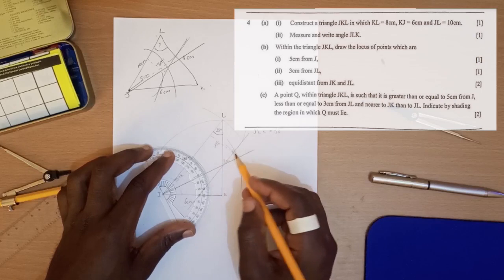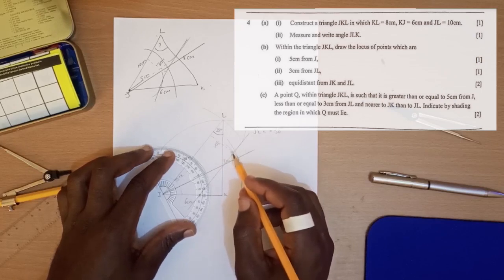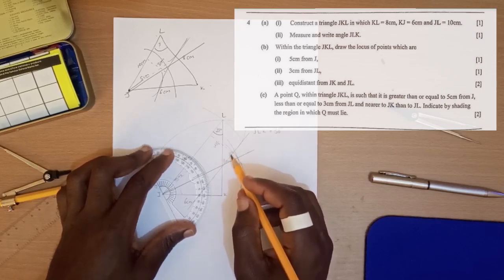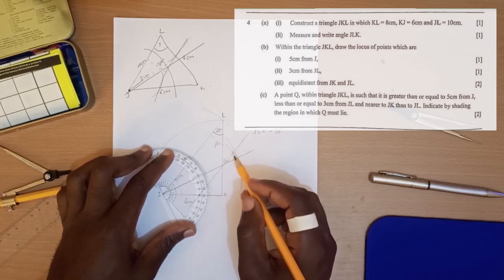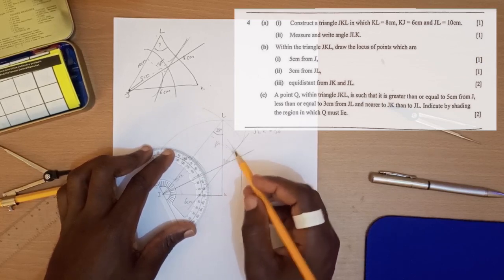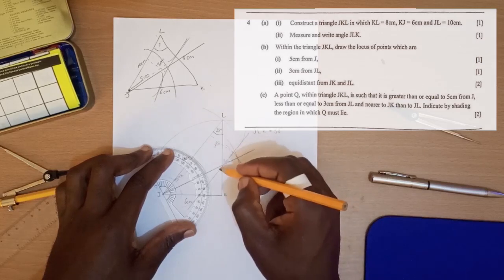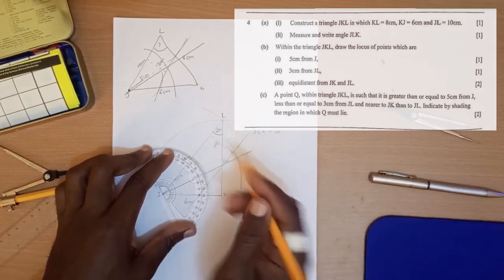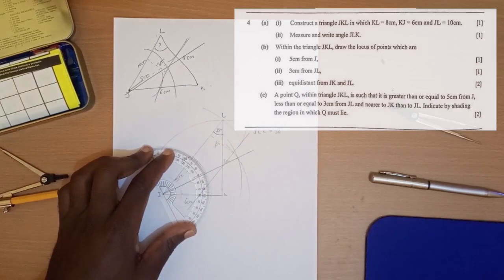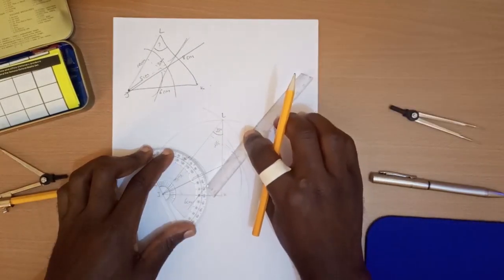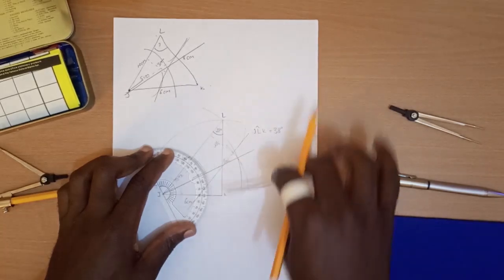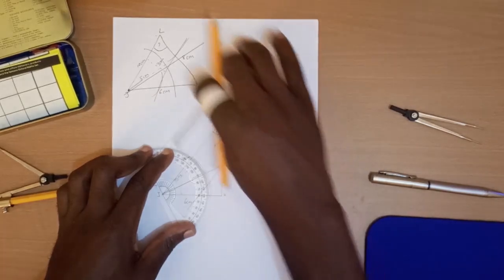And the next condition to satisfy is that Q is less than 3 cm from JL. So JL is ending here. Less than means less than 3 cm. The 3 cm line is this one here. So less than, it means it's only this side.